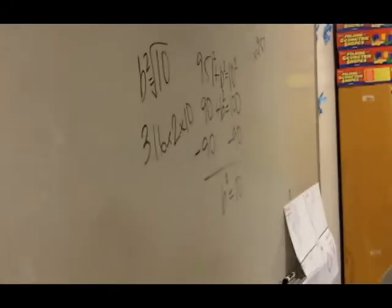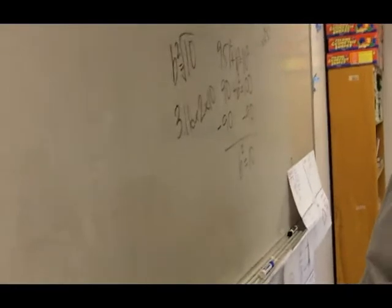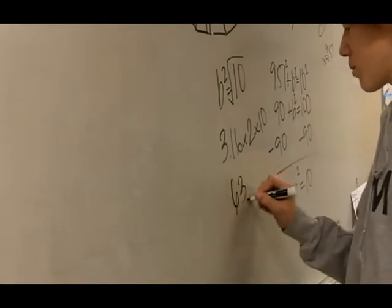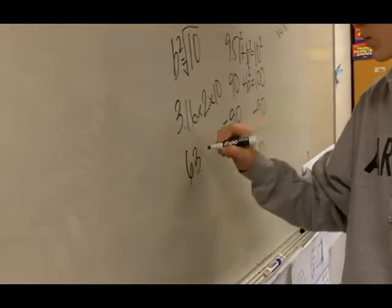When you take that times 2 times 10, you get 63.245, and we're going to round that to 63.25.